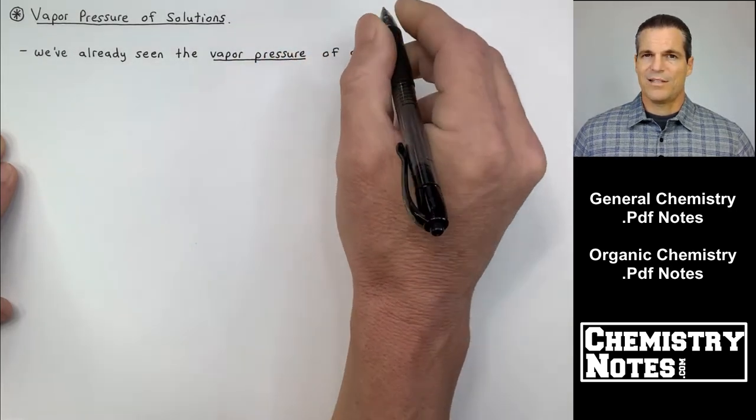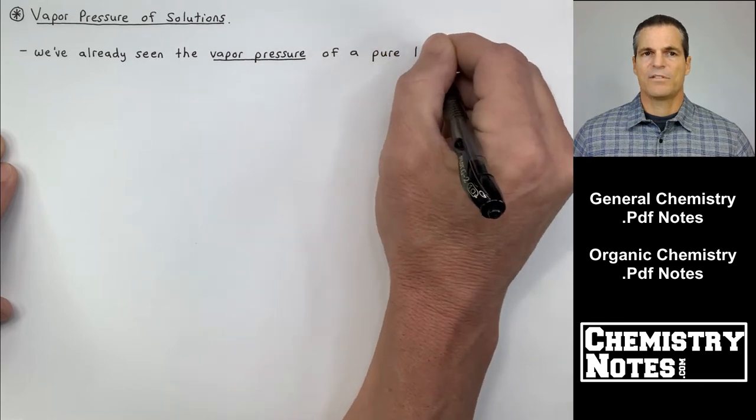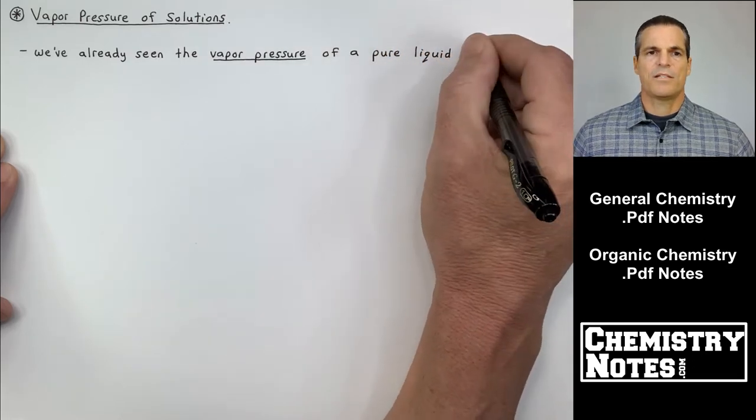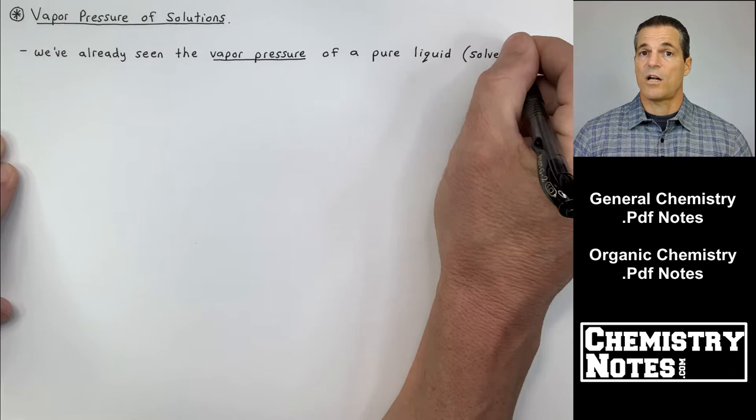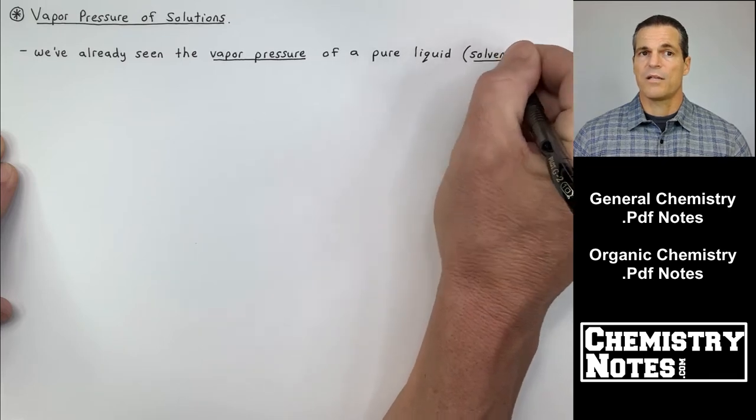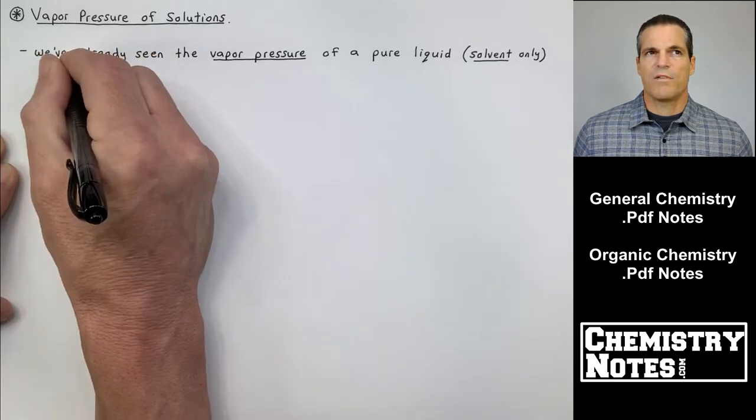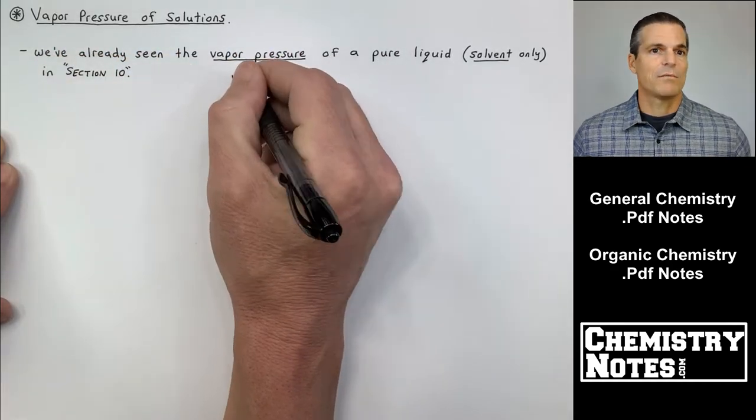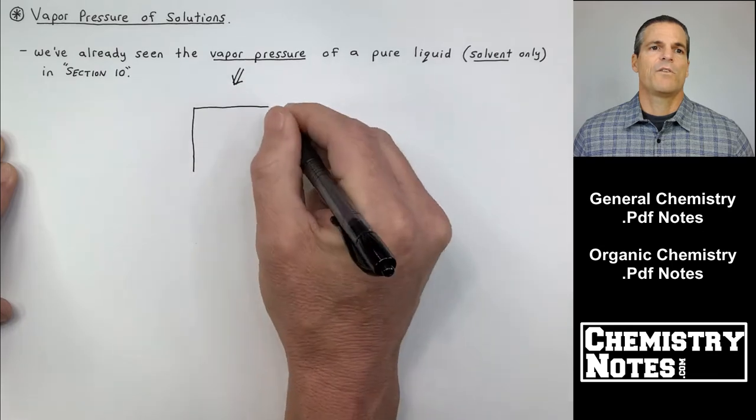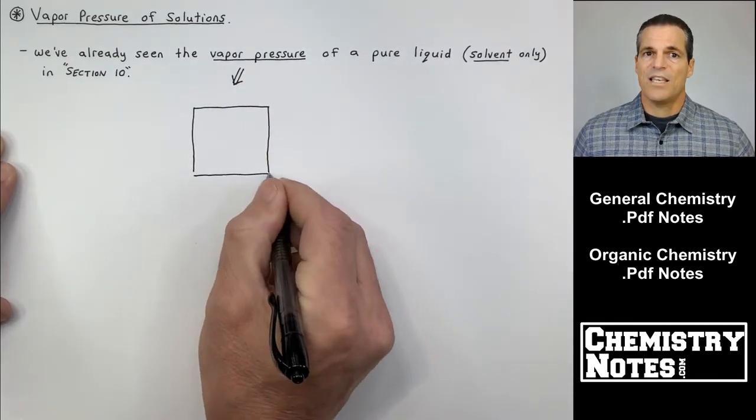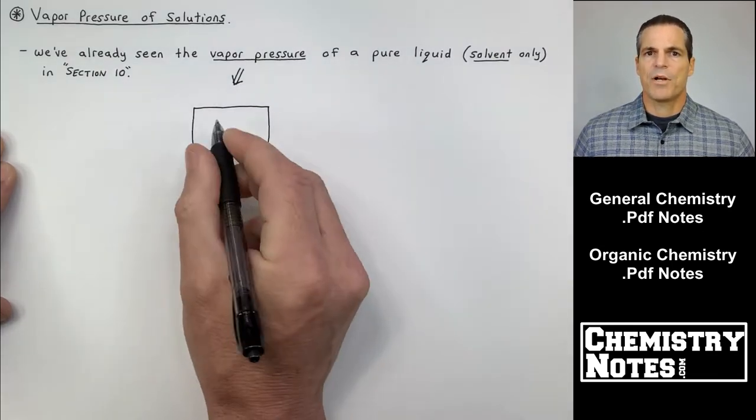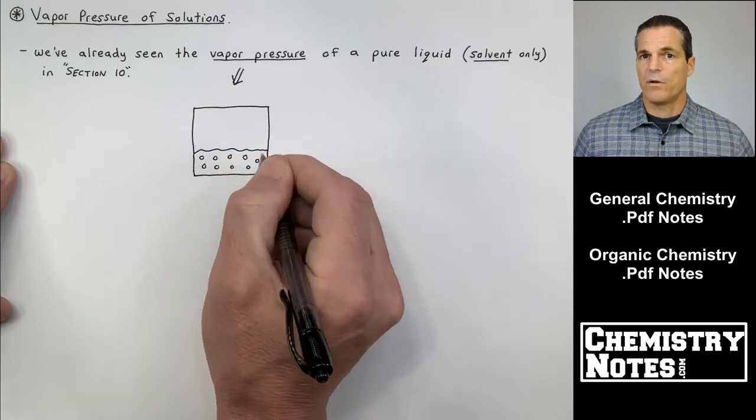Now vapor pressure is not a new term to us. We have seen it in section 10. In section 10 we talked about liquids, solids, and intermolecular forces. So in section 10 we talked about the vapor pressure of pure liquids. In other words we talked about the vapor pressure of pure solvent. So we've already seen the vapor pressure of a pure liquid, solvent only.